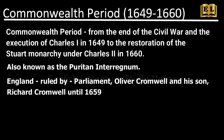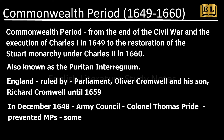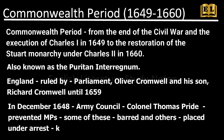After the initial defeat of the Royalist Armies in the Civil War, many Parliamentarians wanted to make peace with King Charles I. In December 1648, under the orders of the Army Council, Colonel Thomas Pride prevented these MPs from entering Parliament. Some were simply barred and others were placed under arrest. This was known as Pride's Purge.